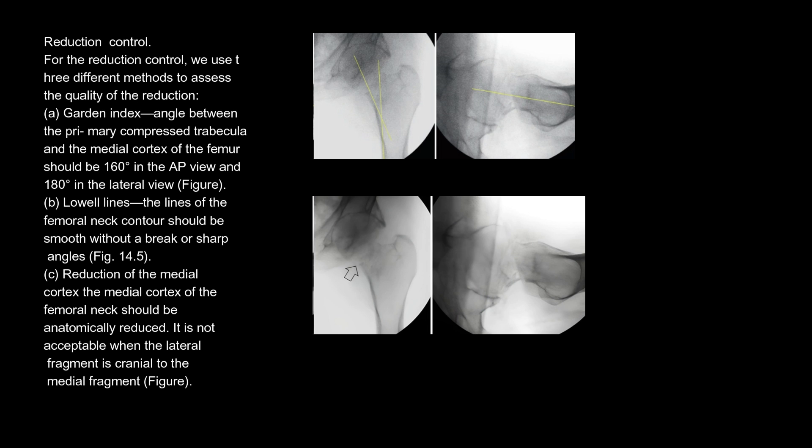Reduction Control: We use three different methods to assess the quality of the reduction. Method A — Garden Index: The angle between the primary compressed trabecular and the medial cortex of the femur should be 160 degrees in the AP view and 180 degrees in the lateral view.